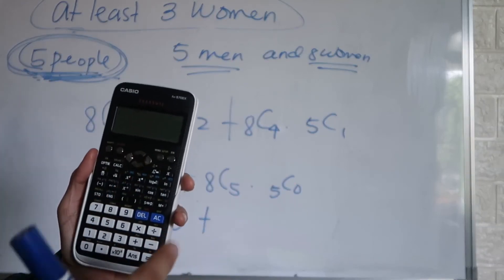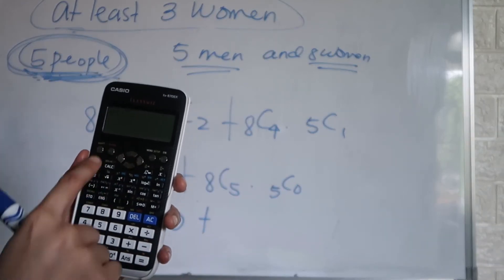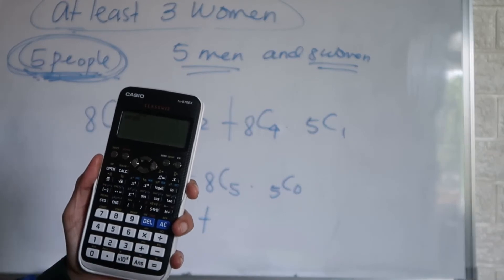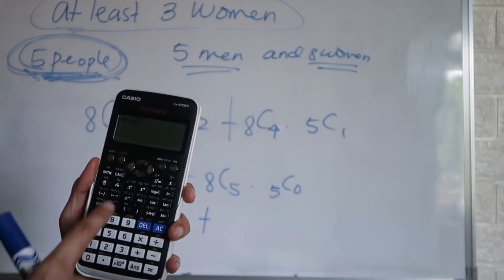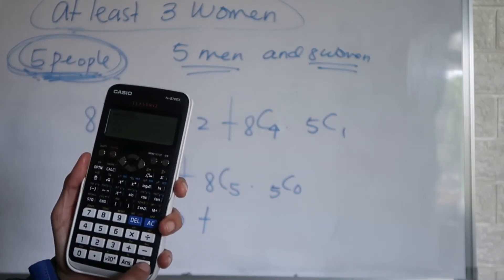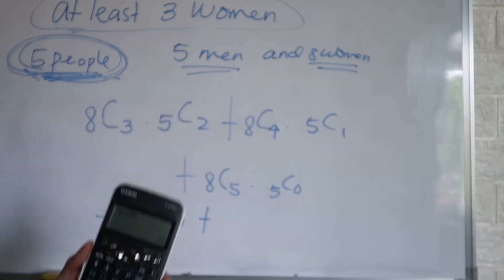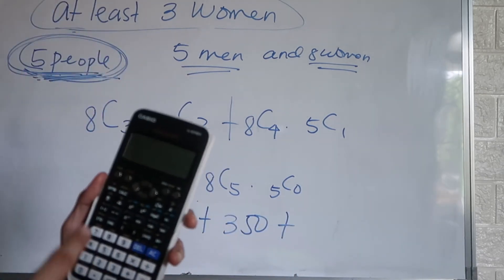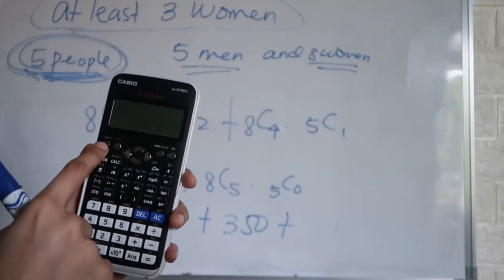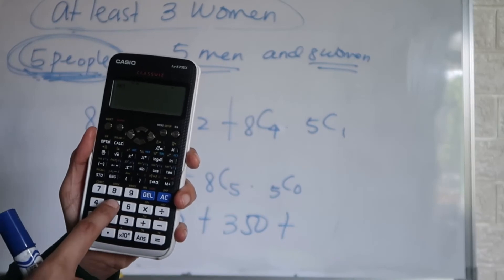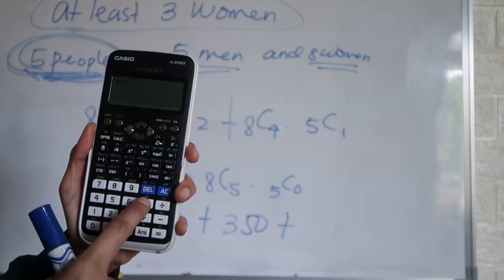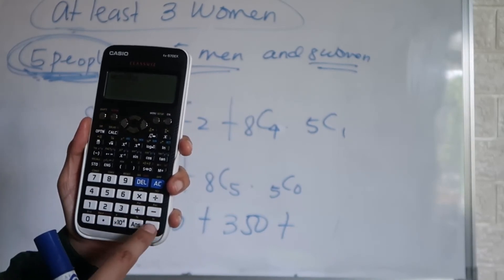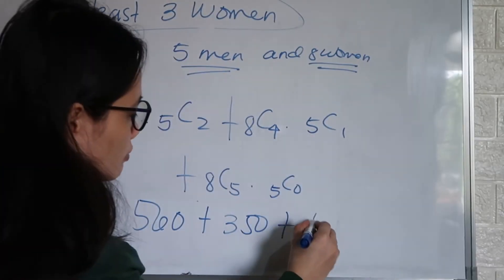Next: C(8,4) multiplied by C(5,1) — that would be 350. And then C(8,5) multiplied by C(5,0) — that would be 56.